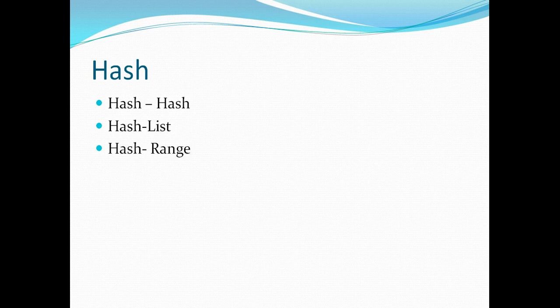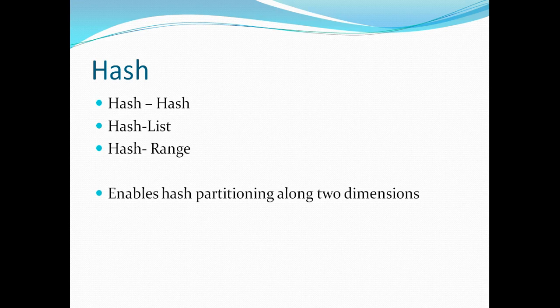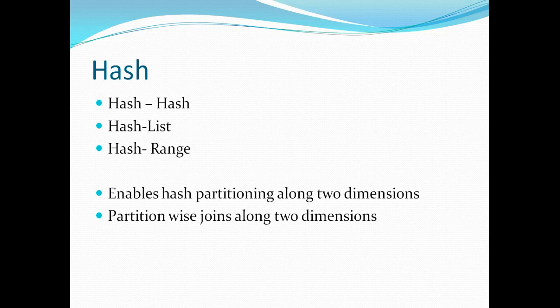The final type is hash composite partitioning, which includes hash-hash, hash-list, and hash-range. The first objective with hash partitioning is to equally distribute data across different nodes to enable partition-wise joins, and then further partition using hash, list, or range. The eventual objective is to enable hash partitioning along two dimensions and implement partition-wise joins using those two dimensions.